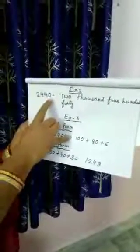Exercise 2 — check out number names. Do you know what is the meaning of number names? You have to write the spelling. For example, 2440 — write the spelling of this number.